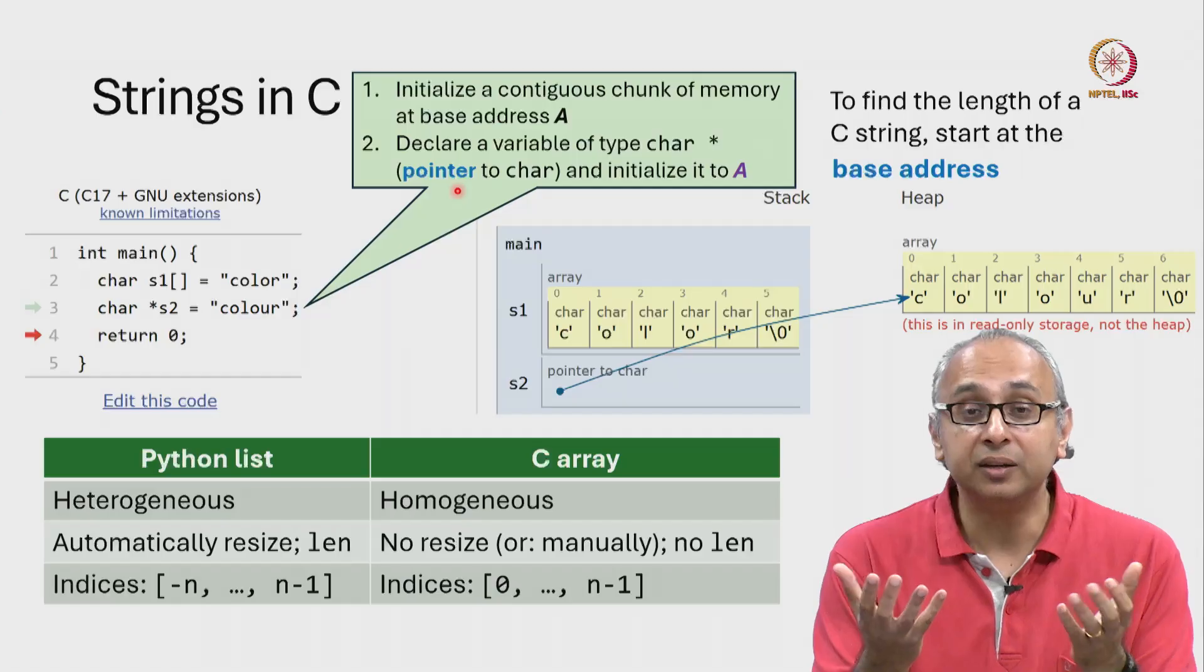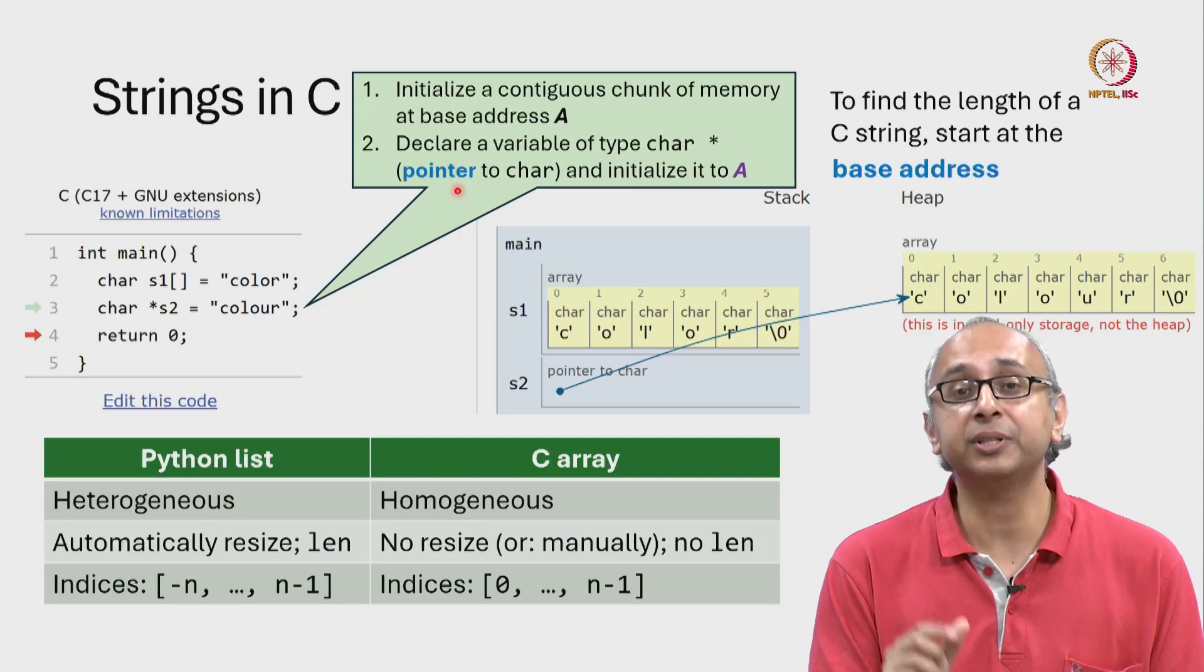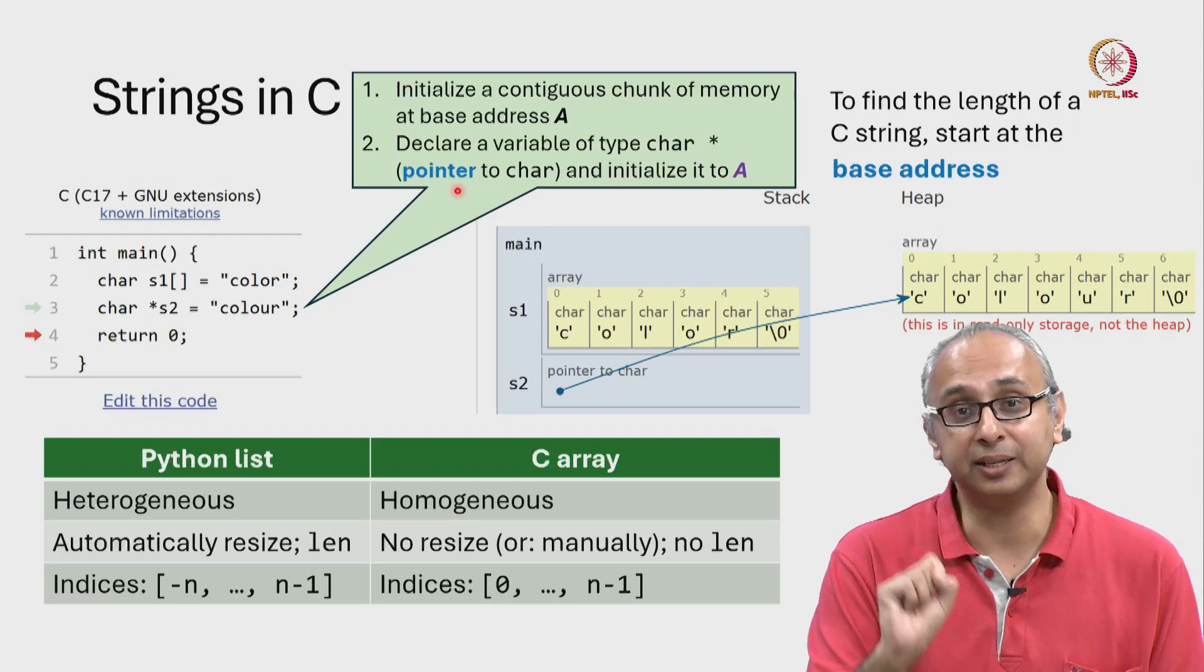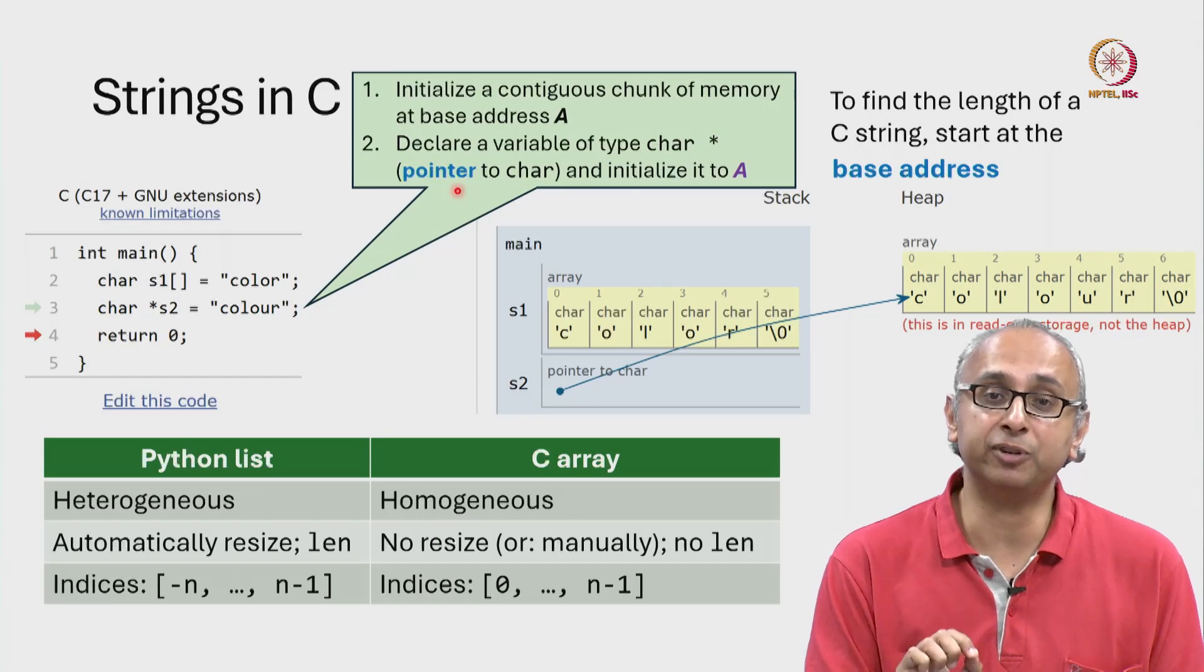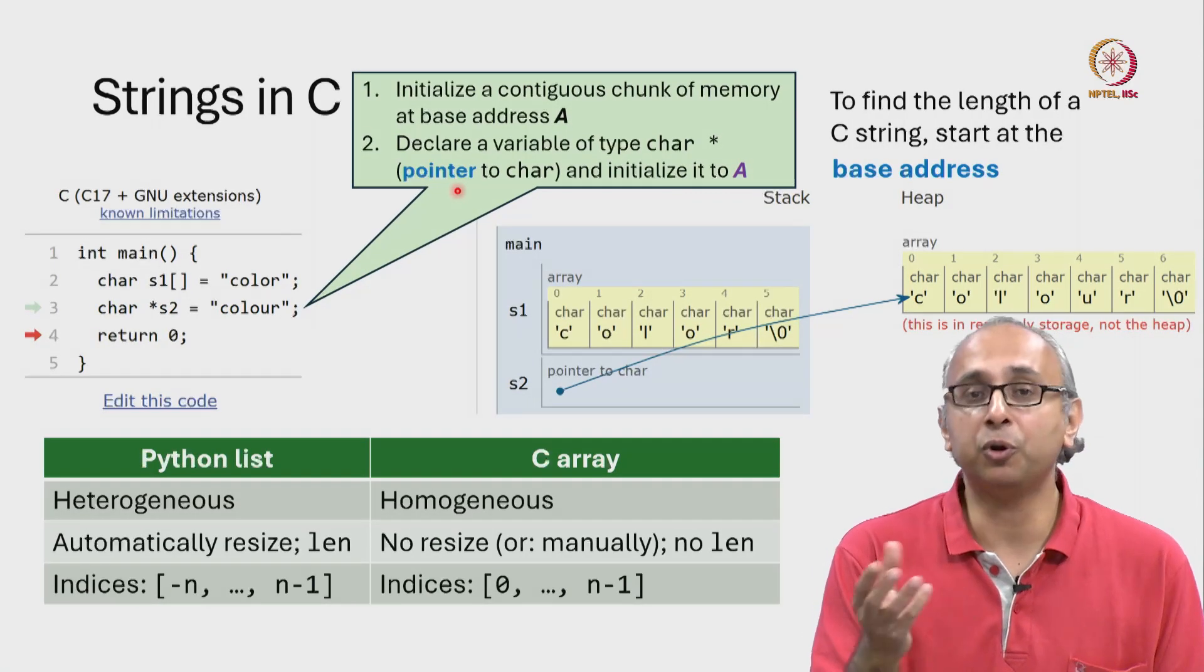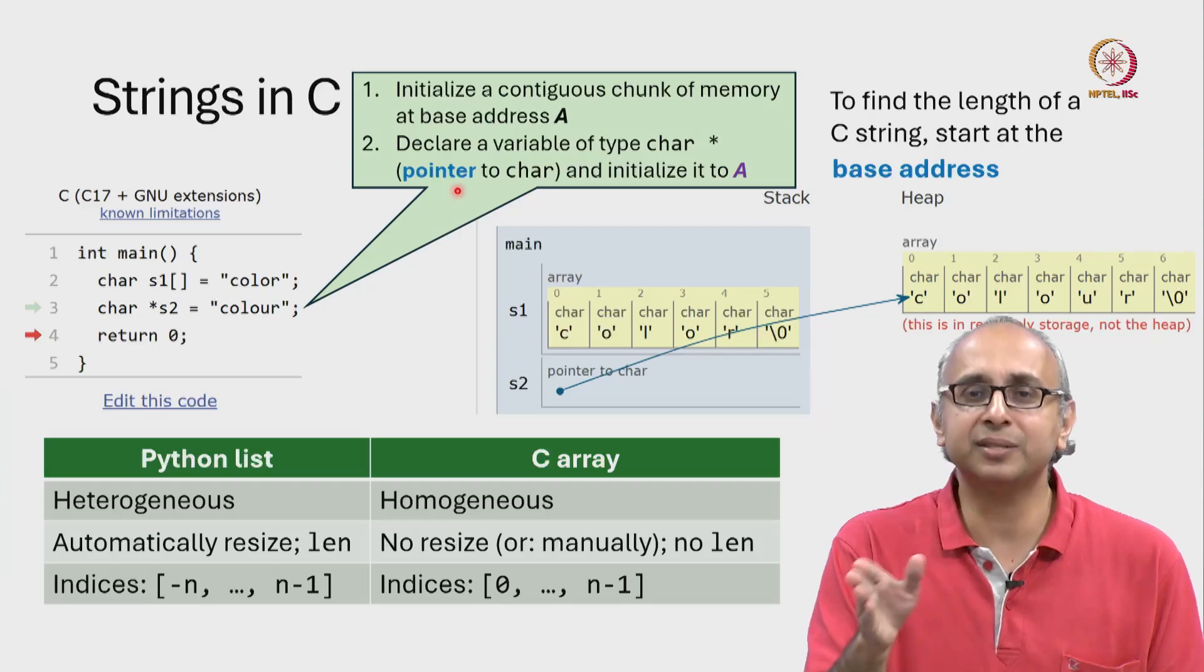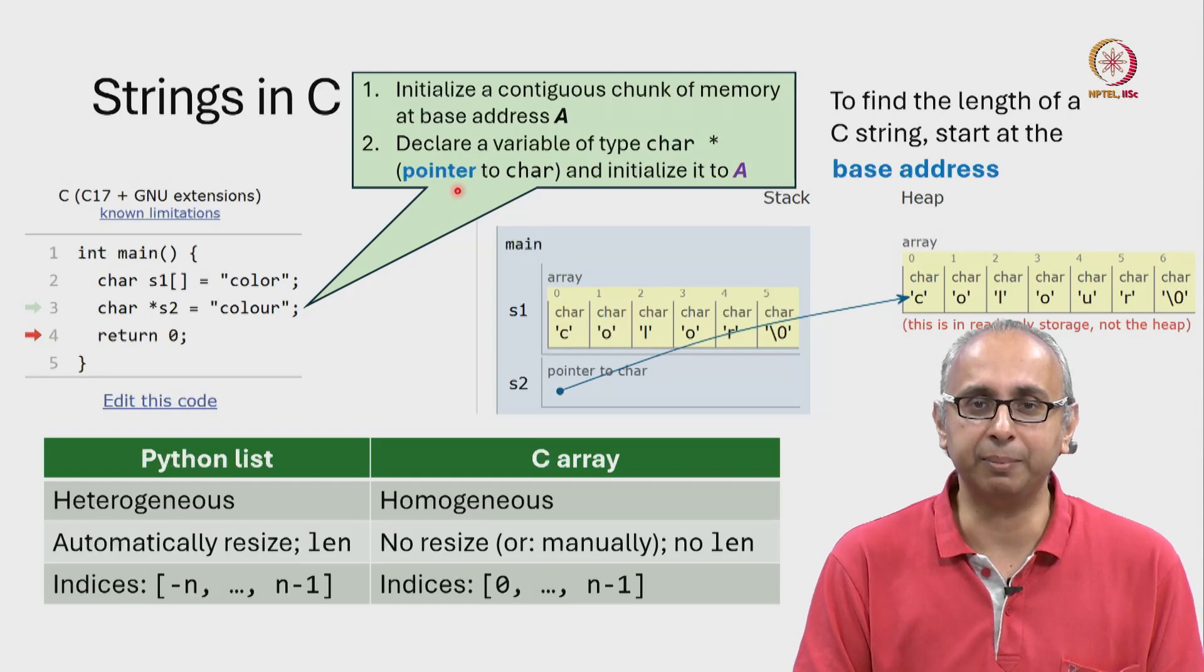So a char is a special type of variable that is capable of holding a single letter. An int is a special type of variable that is capable of holding an integer in some fixed range in the C programming language.